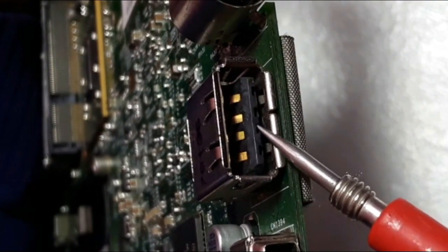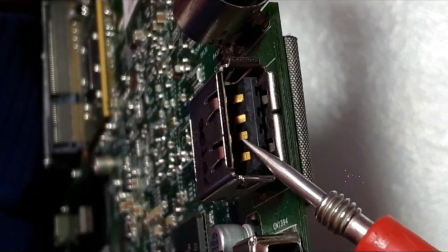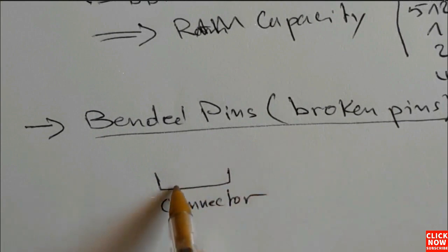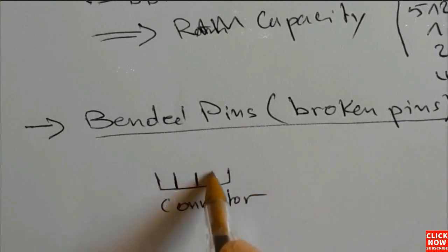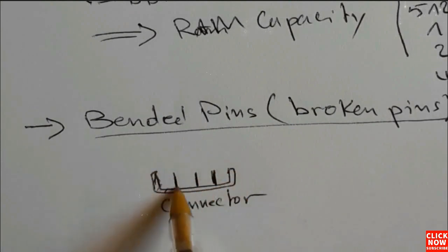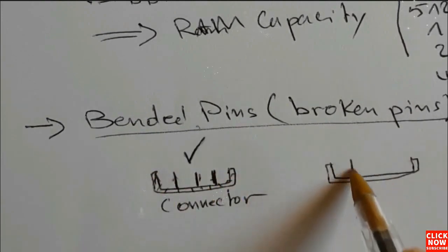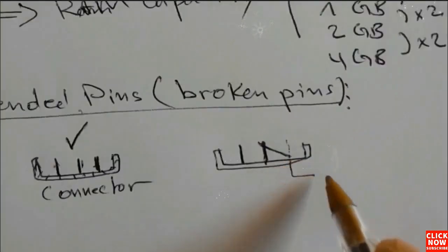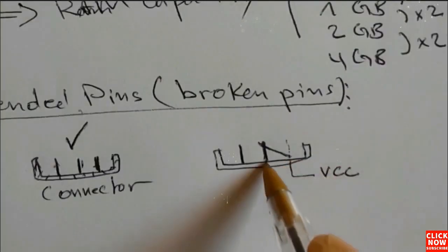Pay attention to connectors, especially USB connectors. If a USB connector is damaged or has any bent or damaged pins, this automatically causes a short circuit in the motherboard. Always check the serviceability of USB connectors. For example, a good connector has three straight pins, but a connector with a bent third pin creates a short circuit.